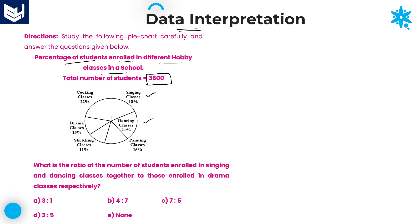There are six different hobby classes: singing, dancing, painting, stitching, drama, and cooking. The pie chart shows what percentage of students are enrolled in each of these six classes. Once you understand this information, calculating the number of students in each hobby class is straightforward, and problem solving becomes easy.